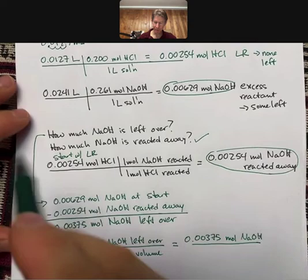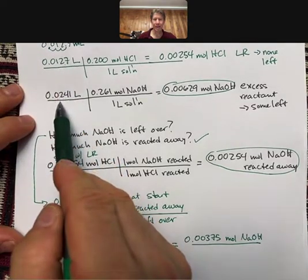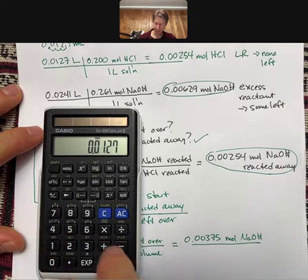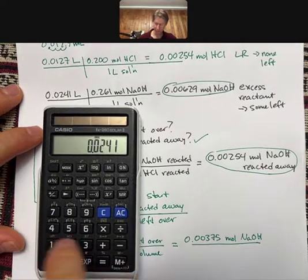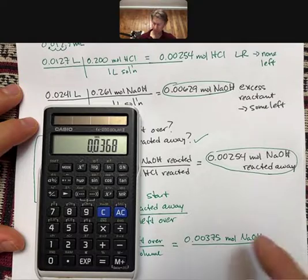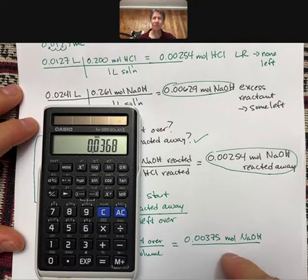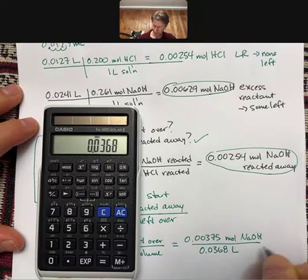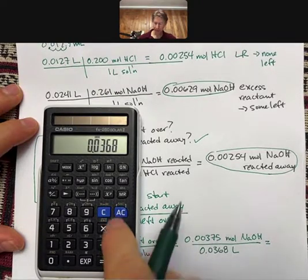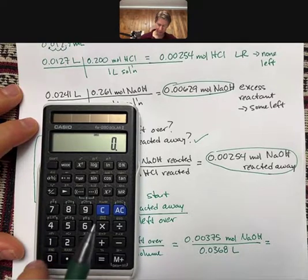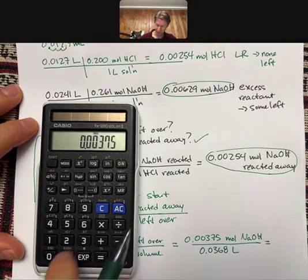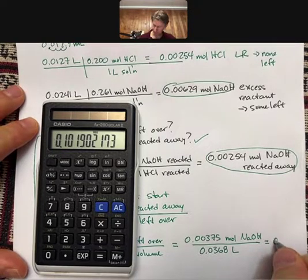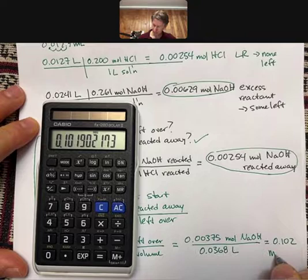It's off screen except for the problem statement, but these are the two milliliters that we had. So we're going to add these two up to get our total volume. Looks like it's 0.0127 plus 0.0241, and we'll keep it in liters since we're doing molarity here, which is moles per liter. And I get 0.0368. Let's go ahead and do that. I have 0.00375 divided by 0.0368, and I get 0.102 molarity sodium hydroxide.